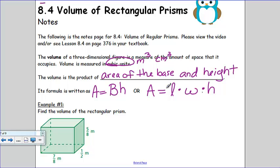Example number one says find the volume of the rectangular prism. Let's write our formula first. Volume equals the area of the base times the height. Notice that the base is a rectangle. To find the area of a rectangle, we do length times width.